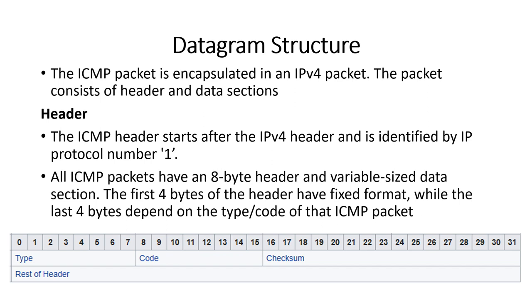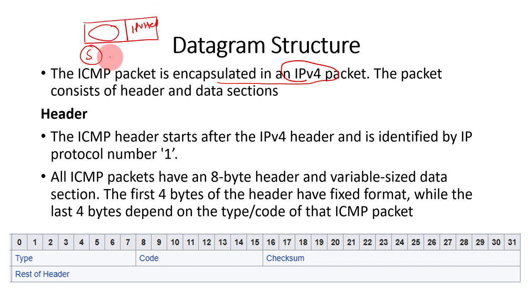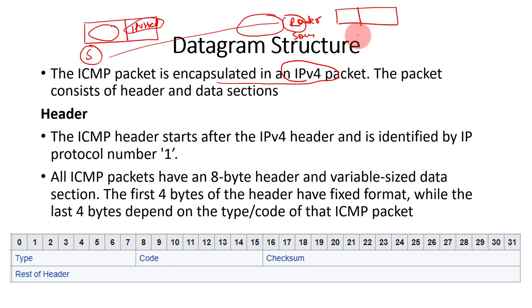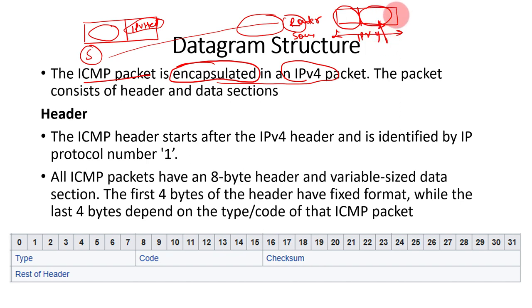Now we should understand the ICMP datagram structure. This ICMP datagram structure is encapsulated in an IPv4 packet. The sender sends a data packet containing an IPv4 header and some data. When source quench happens and there is network congestion, the router creates a new IPv4 packet. This new packet contains an IPv4 header followed by an ICMP packet — the ICMP packet is encapsulated within the IPv4 packet.